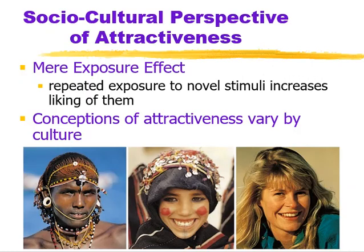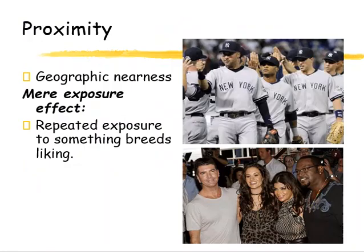Other things that influence attractiveness include sociocultural influences and the mere exposure effect — the more we are around someone, the more we like them. You might become attracted to someone because you've continuously been exposed to them at the same place and time. There are also cultural ideas about what's attractive, and what's attractive in one culture may differ from another. Proximity — geographic nearness — means the more we're around someone, the more likely we might become attracted to them. Repeated exposure to something breeds liking.